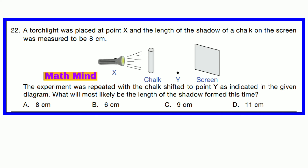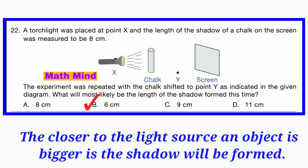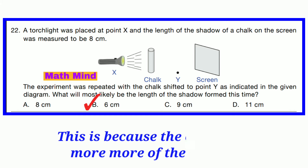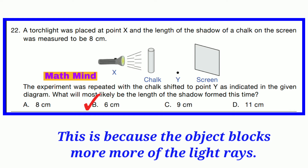Question number 22. A torch light was placed at point X, and the length of shadow of a chalk on the screen was measured to be 8 cm. The experiment was repeated with the chalk shifted to point Y. What will most likely be the length of shadow formed this time? Correct answer is option B: 6 cm. An object closer to the light source forms a bigger shadow, because it blocks more of the light rays. Moving the chalk piece to point Y, it will form a smaller shadow than 8 cm. So option B is correct: 6 cm.